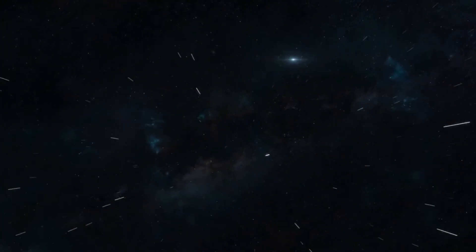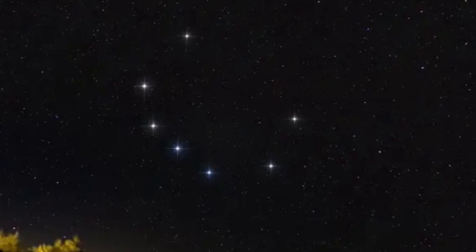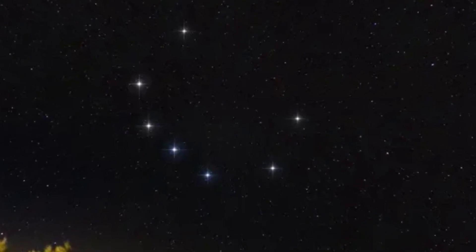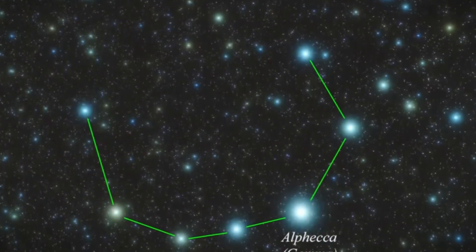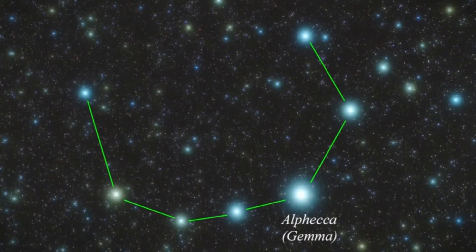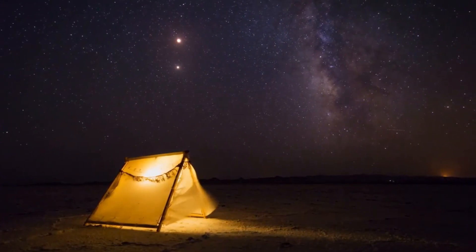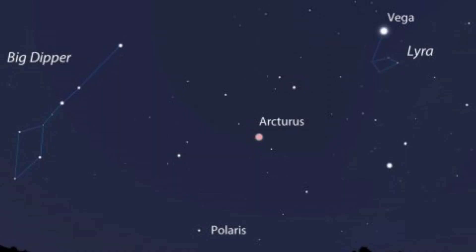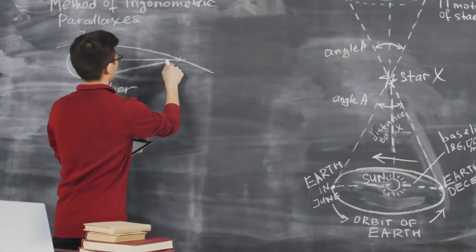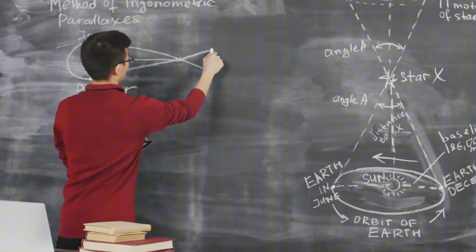Wondering how to catch sight of the T Coronae Borealis Nova? For stargazers, finding the northern crown is key. This horseshoe-shaped constellation lies west of the Hercules constellation and can be best seen on clear nights. Start by locating two of the brightest stars in the northern hemisphere, Arcturus and Vega. Draw an imaginary line between them, which will guide you toward Hercules and the Corona Borealis.